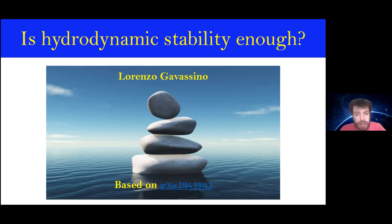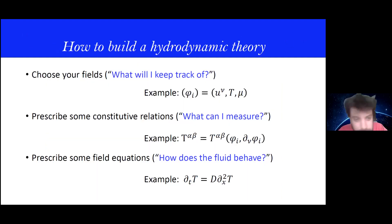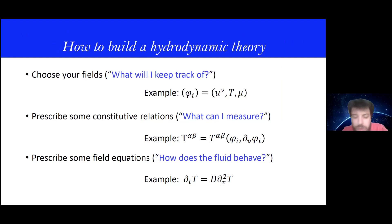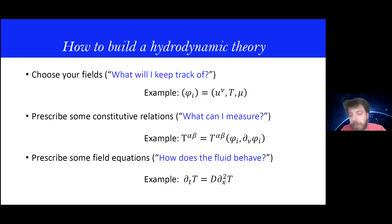First of all, let's start with what is a hydrodynamic theory. When you prescribe a hydrodynamic theory, you need to make three choices — it's a game of three moves. First, you choose some fields, and these fields should somehow track the information that you want to track. So if you have these fields across all spacetime, you assume that you have all the knowledge about what you are interested in.